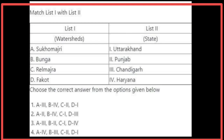Matching List 1 with List 2 for watersheds and their states: Sukhomajri watershed is in Chandigarh, Bunga watershed is in Haryana, Raulmajra watershed is in Punjab, and Fakot watershed is in Uttarakhand. The correct option is the first option.